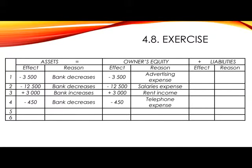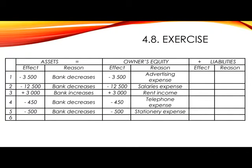Number 5. Bought and paid for stationery, 500 rand. Remember that stationery refers to things such as pens, pencils, and paper that we would use up in the business. Since we assume it is going to be used up, to simplify matters, we can record it as an expense at this stage. Our two accounts are bank in assets and stationery, which will decrease equity. In assets, we show minus 500 as bank decreases, and in equity, minus 500 for stationery expense.